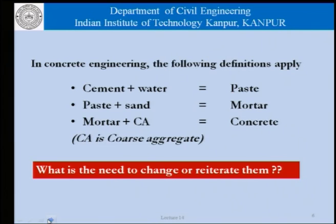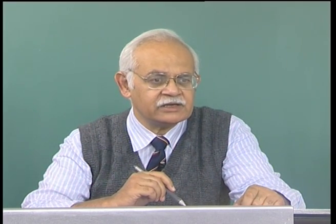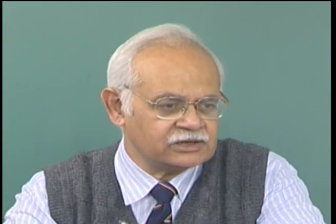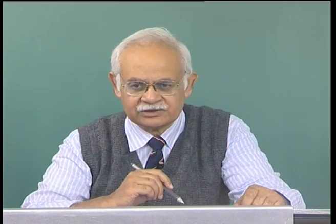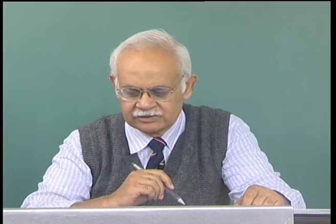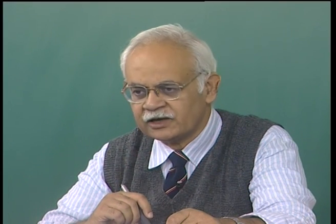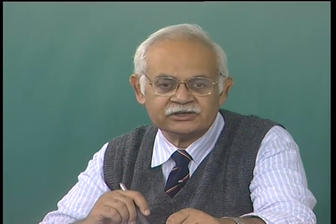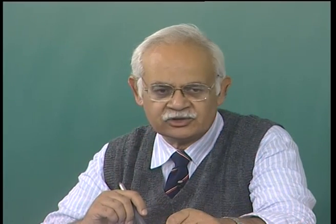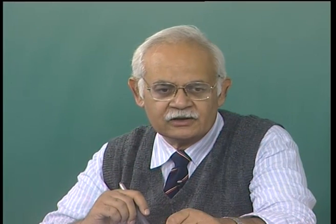The definitions of paste, mortar, and concrete are under revision. It is not only cement, but other materials with a fineness close to that of cement that may also be considered part of the paste as far as fresh concrete properties are concerned — even if those mineral admixtures may not contribute as effectively as cement to strength development. Similarly, materials such as ground copper slag can be used as partial replacement of natural sand, provided their properties are close enough to those of normal sand.